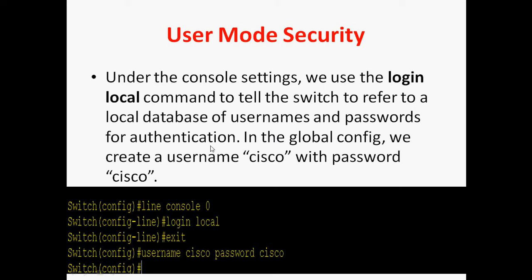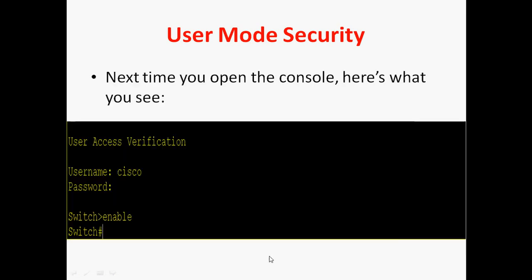In global config, you can create a username and password. I will create username 'cisco'. In global mode, 'username' is a keyword and 'password' is a keyword. Whatever username and password you want, you can create. Here I set both as 'cisco'. The next time you open the console, it will ask for username and password. Username is 'cisco', password is 'cisco'. When typing the password in Cisco IOS, it won't show anything on screen, but it is being entered in the background. After entering user mode, you give the 'enable' command to go to privilege mode.